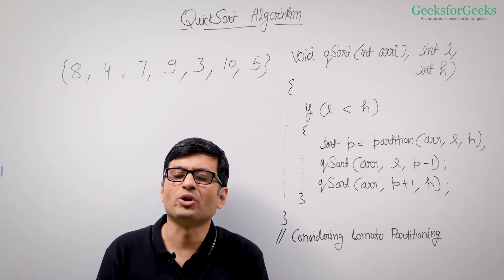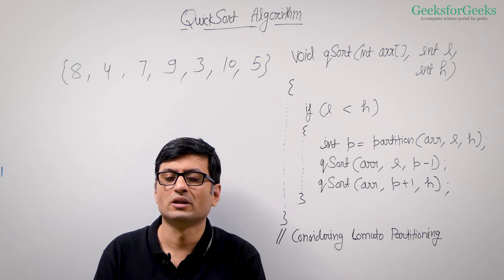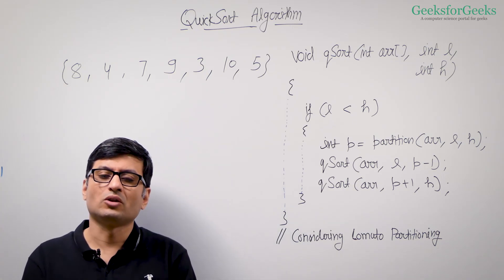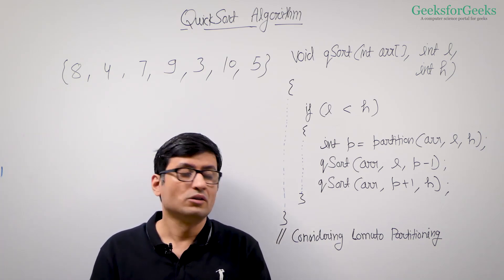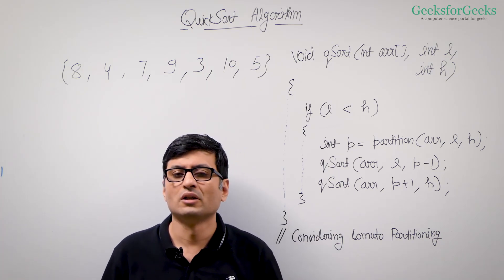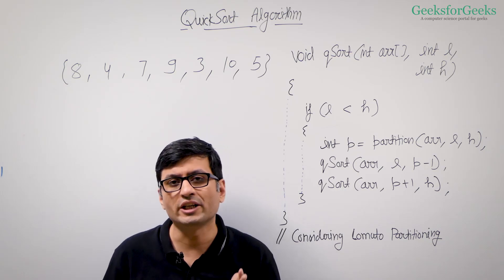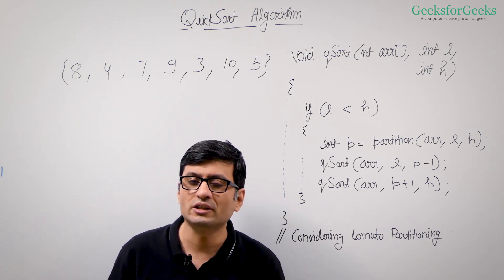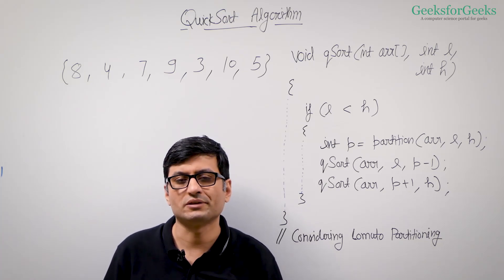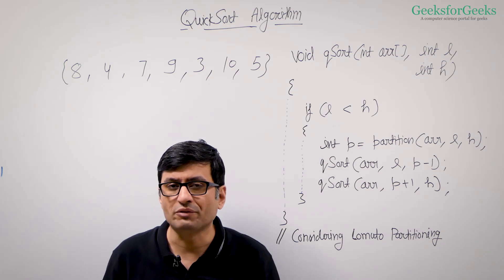In the previous video, we introduced quicksort. Let us now understand the algorithm. We are going to consider Lomuto partition to understand this algorithm. The algorithm changes when we use Hoares partition. In this video, I am going to first consider Lomuto partition and at the end, I will talk about the changes that we need to make if we use Hoares partition. It is strongly recommended that you see the Lomuto partition video first.